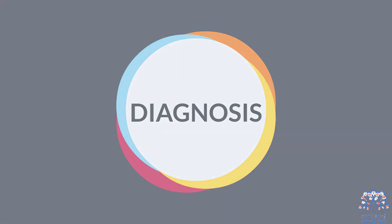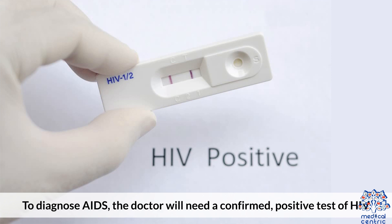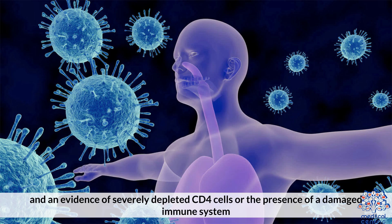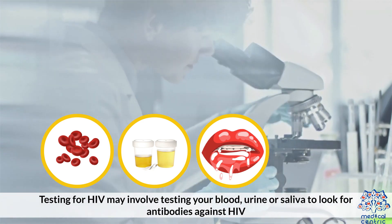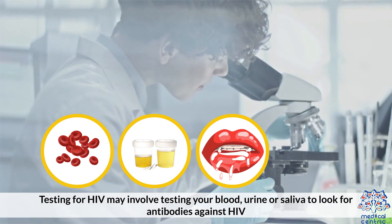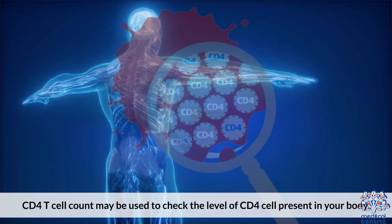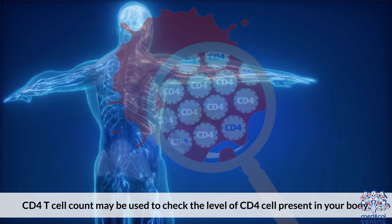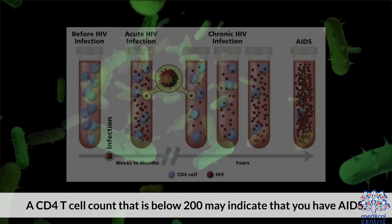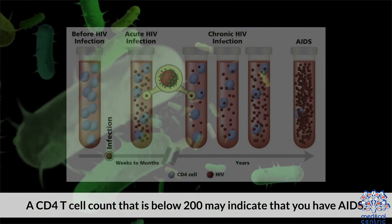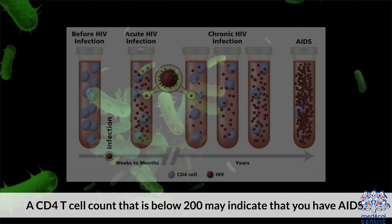To diagnose AIDS, the doctor will need a confirmed positive test of HIV and evidence of severely depleted CD4 cells or the presence of a damaged immune system. Testing for HIV may involve testing your blood, urine, or saliva to look for antibodies against HIV. A CD4 T cell count may be used to check the level of CD4 cells present in your body. A CD4 T cell count below 200 may indicate that you have AIDS.